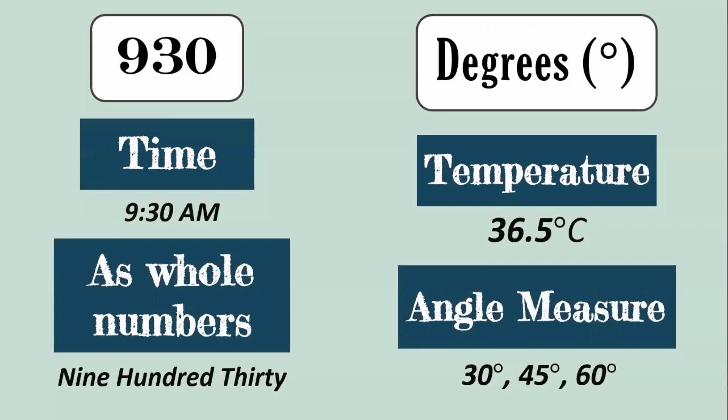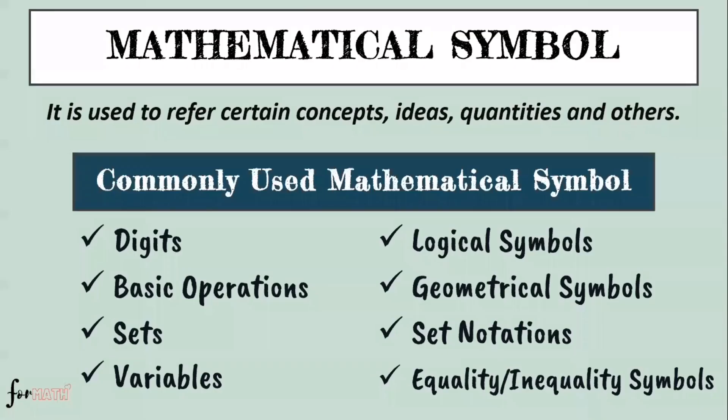What are the mathematical symbols we use? Mathematical symbol is used to refer to certain concepts, ideas, quantities, and others. These are the commonly used mathematical symbols in math. Example, if you have digits, digits are zero, one, two, three, etc., up to nine.